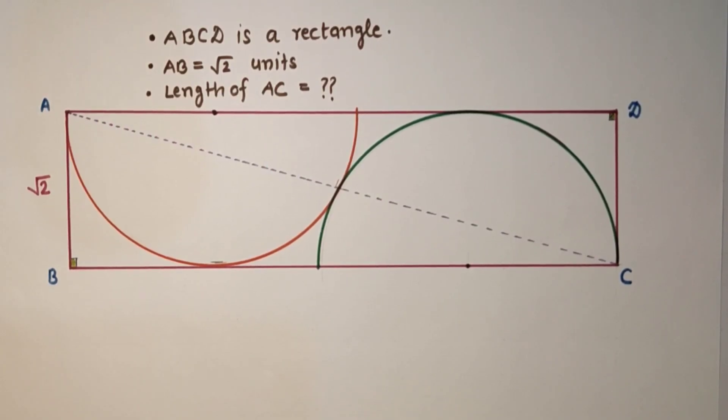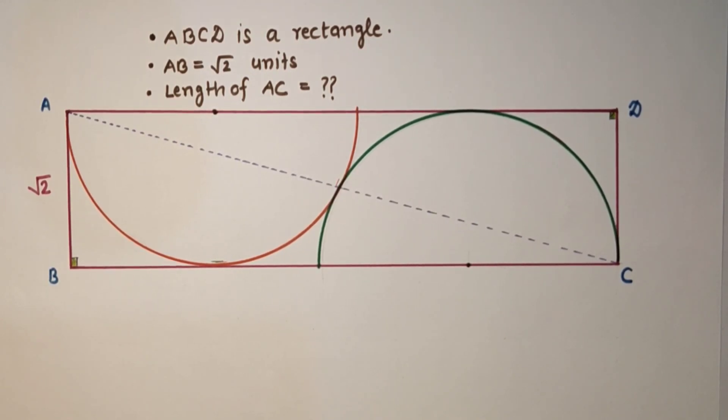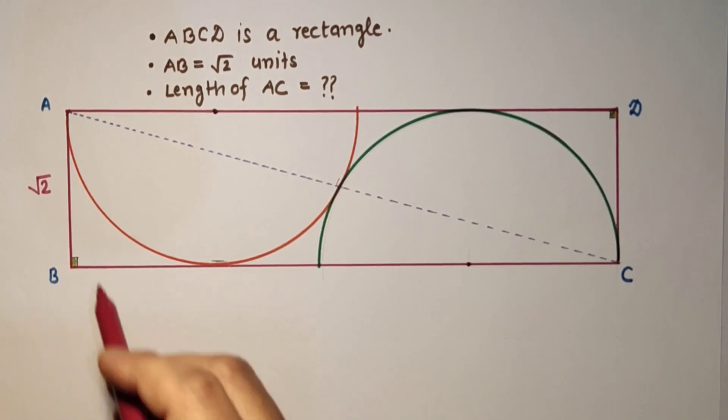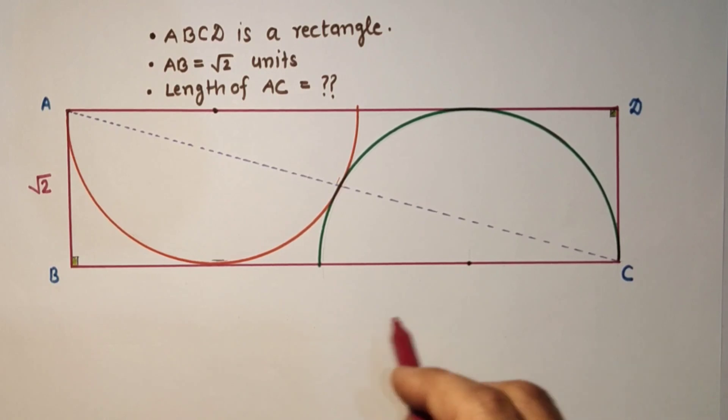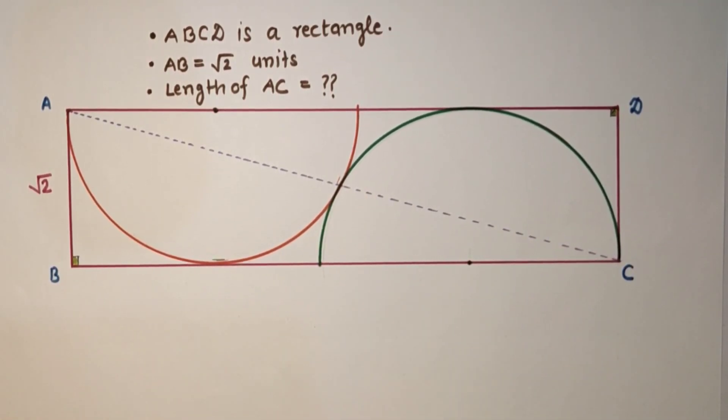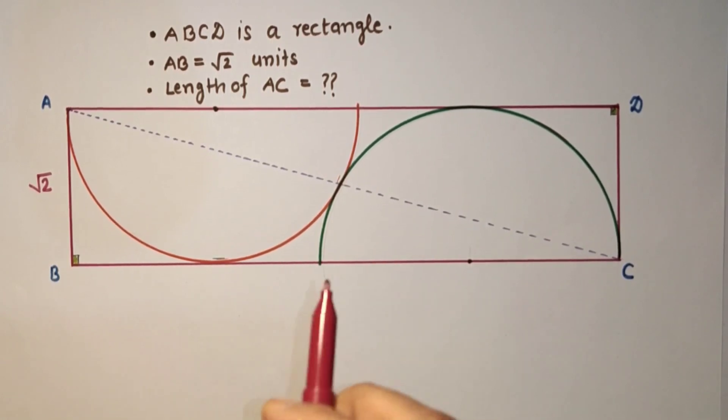Hi everyone, today we will do a very simple but interesting question. In this problem we have two identical semi-circles which are inscribed in this rectangle and touching externally as shown in the diagram.